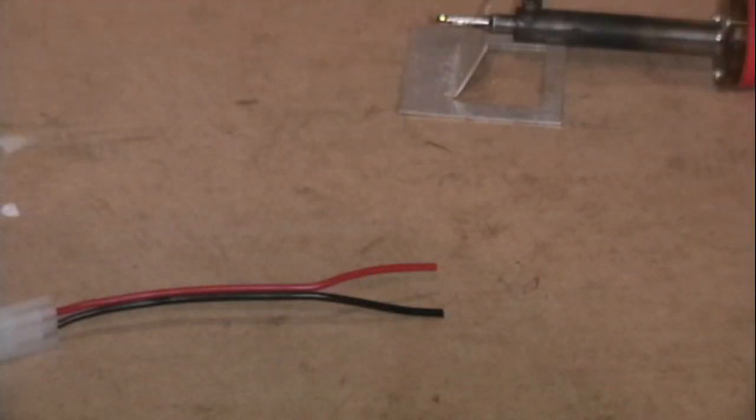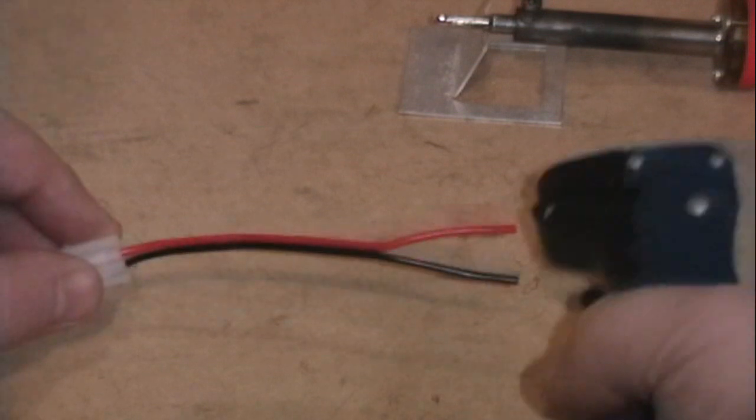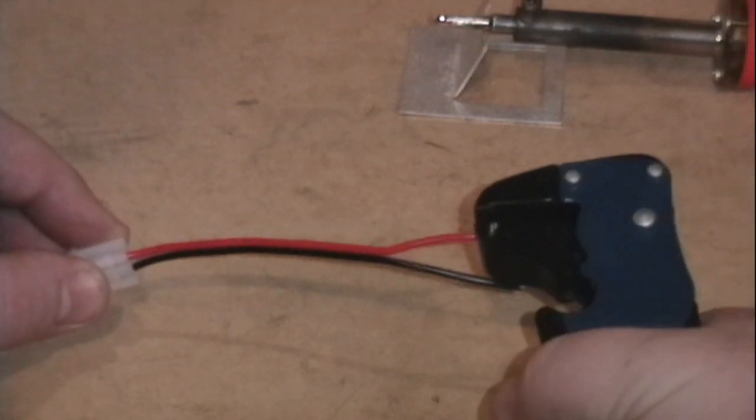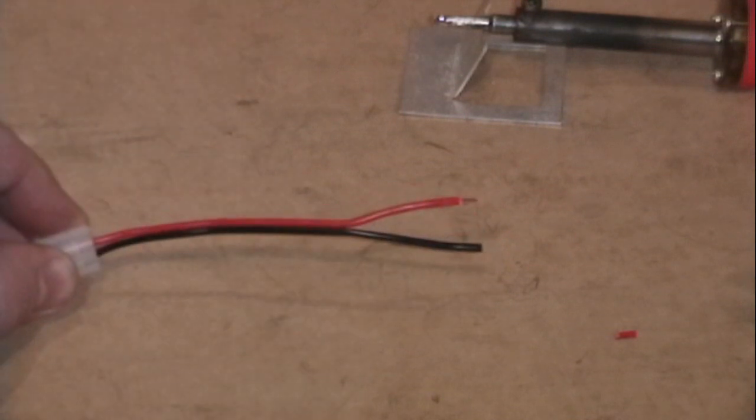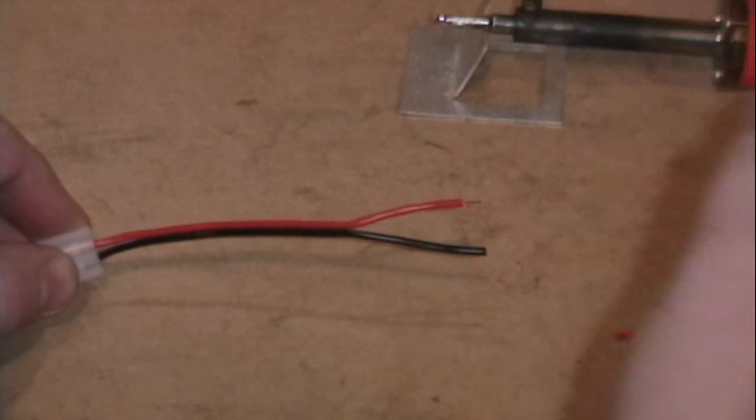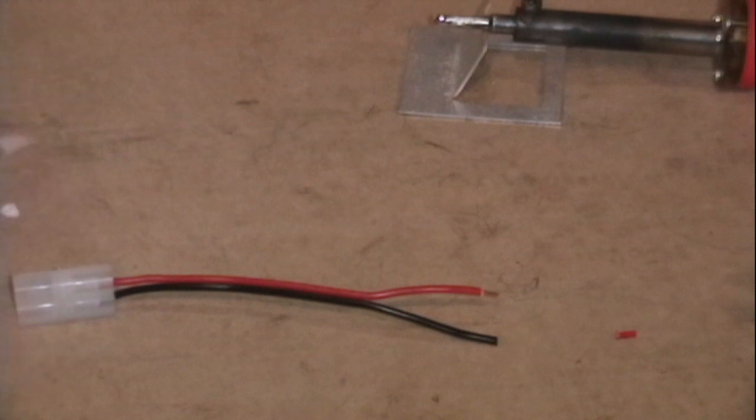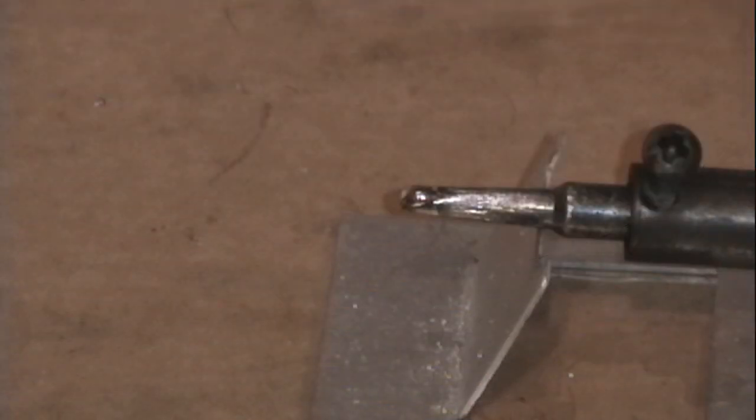Next, you will want to go ahead and prepare your wires. Go ahead and strip the ends of the wires. About an eighth to a quarter of an inch is all that's necessary. If you are connecting a Deans to a battery, I recommend that you only cut and strip one wire at a time, so that way you do not accidentally arc the wires.